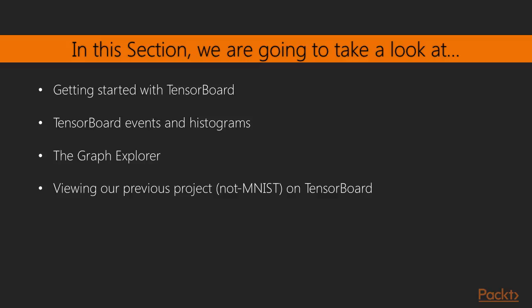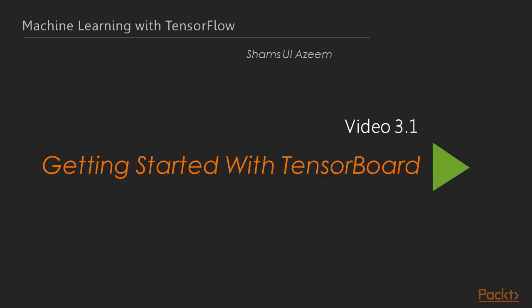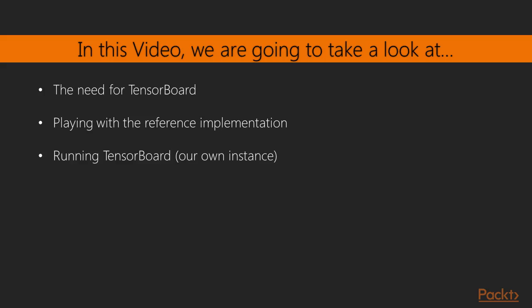So let's get started with TensorBoard. Welcome to the first video of Section 3. We'll start by learning about TensorBoard and its features. In this video, we'll talk about the need of the TensorBoard toolset and how to use an example code for visualizing our classifier, and how to run TensorBoard to actually see the visualizations. We'll talk about why we would be needing TensorBoard in our projects, and we'll look into a reference implementation of the TensorBoard toolset to get a basic feel of how everything looks and how we can use it to our advantage.